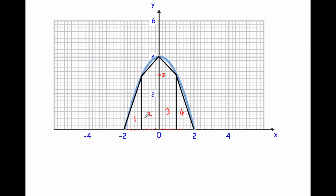Let's find the area of triangle one. Because we're looking at everything sideways — the height is the horizontal distance of each strip — I'm going to consider that distance as the height and the vertical side as the base. So the area of triangle one is half times base times height: half × 3 × 1 = 1.5.